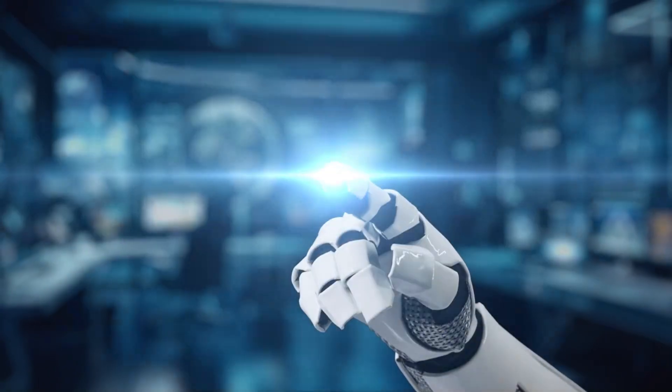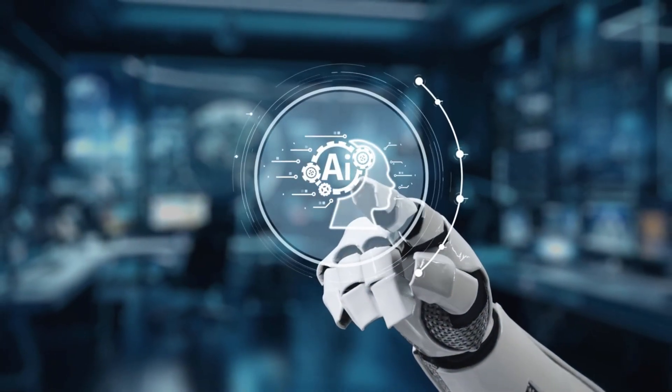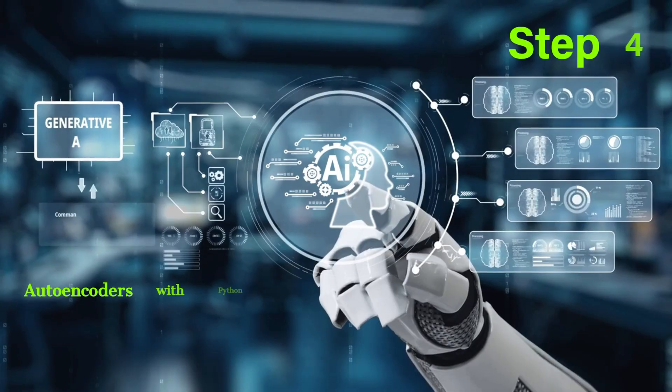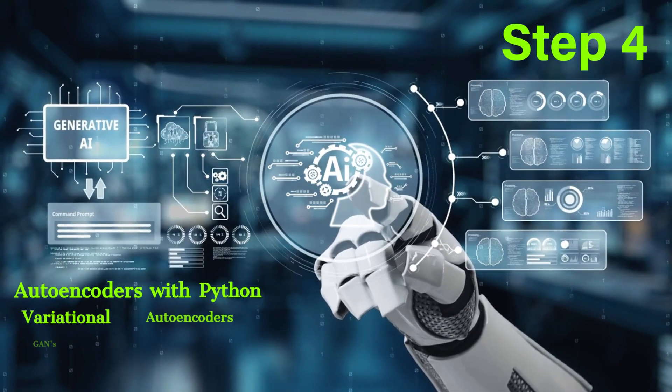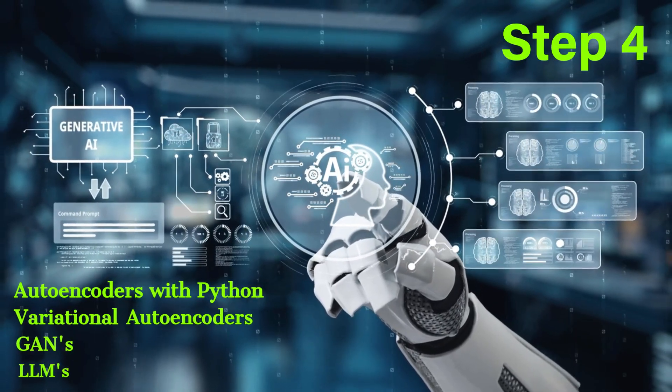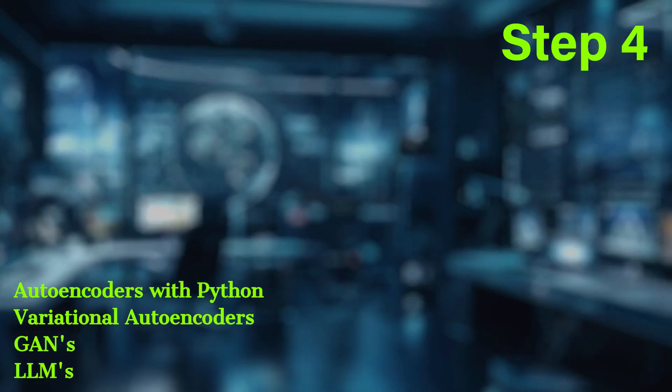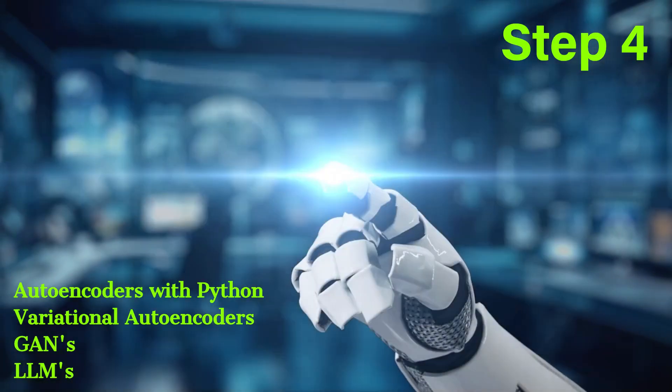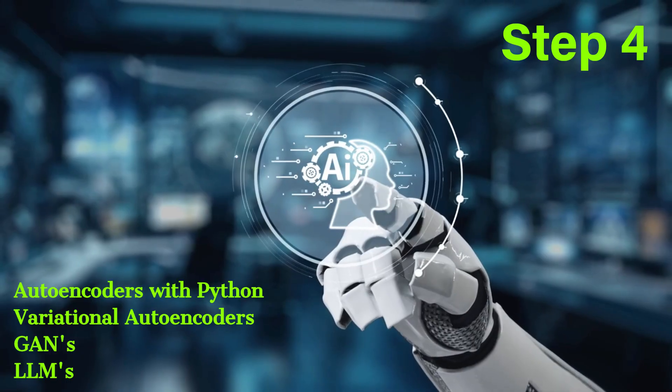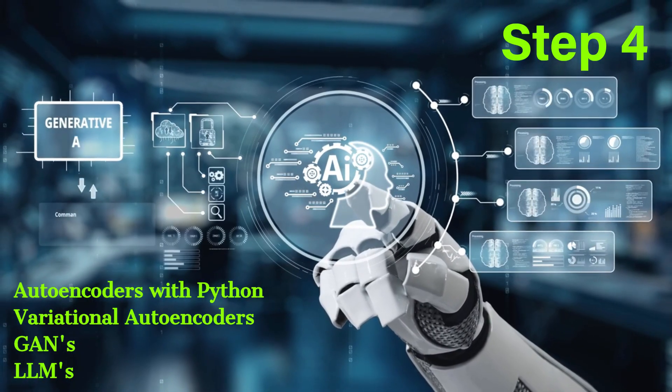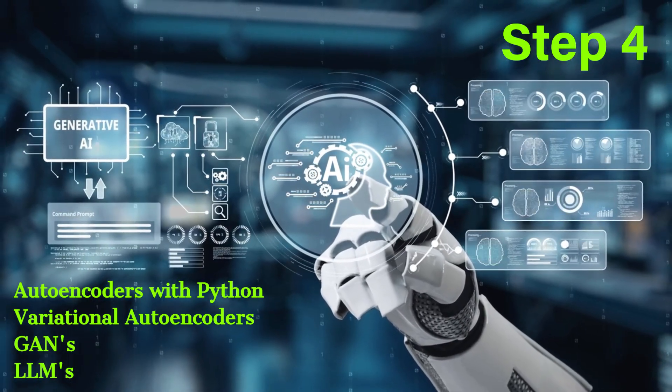Step four is also a most important concept. You must learn about Gen AI models as well as practicing, including autoencoders with Python, along with variational autoencoders, GAN networks, diffusion models, and LLMs. LLMs are the key. This is the AI language.